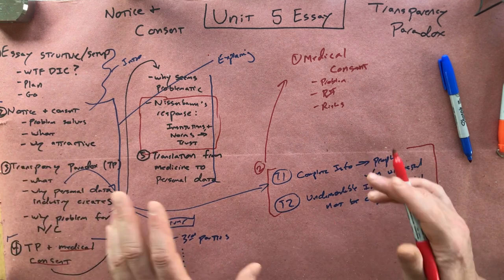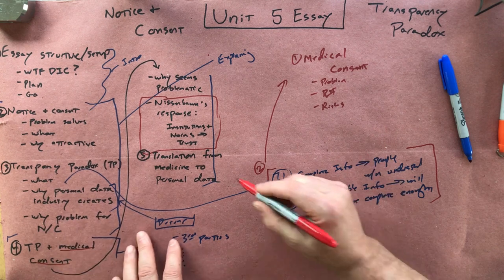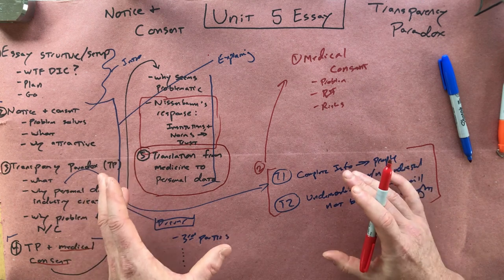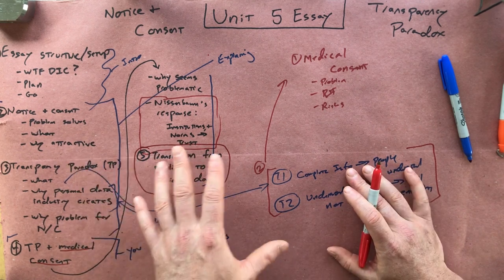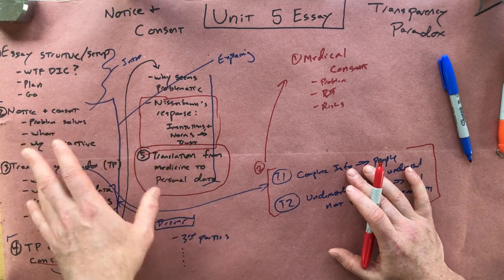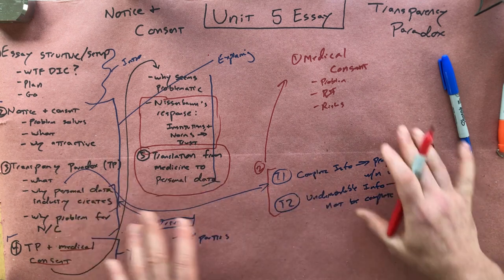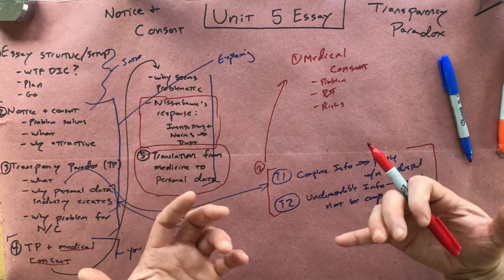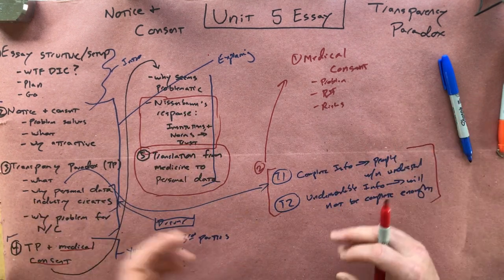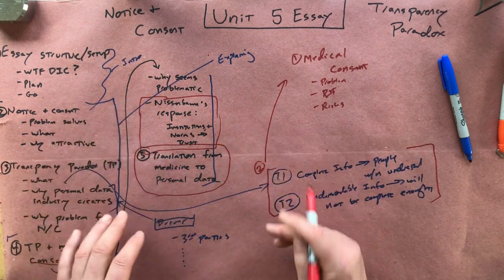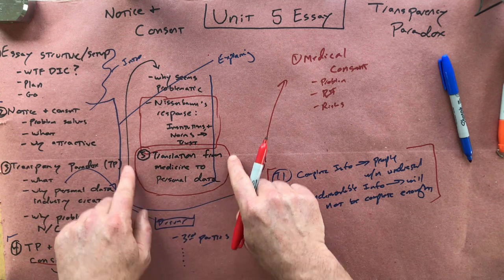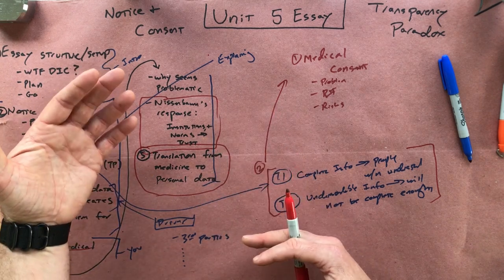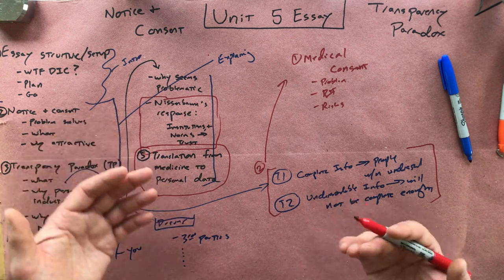So Nissenbaum's view is basically that the transparency paradox would undermine medical consent if we just did it the way we try to do things online. But what actually creates the possibility of legitimate consent is a whole framework of norms, institutions, and laws that allows us to trust doctors and trust that what they're telling us is reliable and the best information we're going to have. So for the last bit, I'm asking you to think about what it might mean to translate the norms and institutions that apply in the medical case to the case of consenting to the use of your personal data.